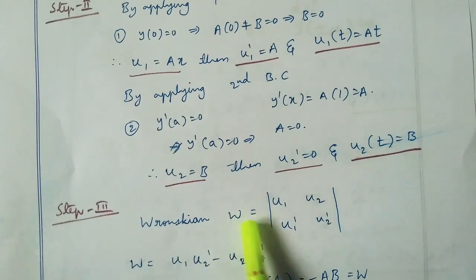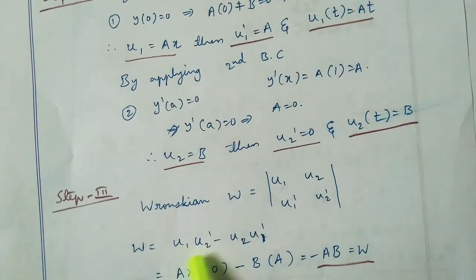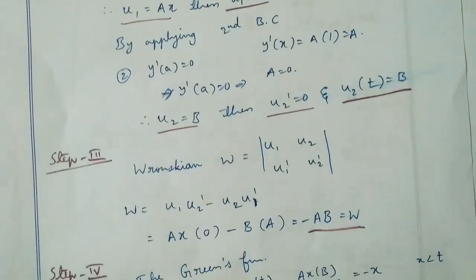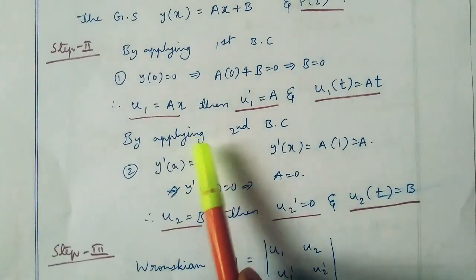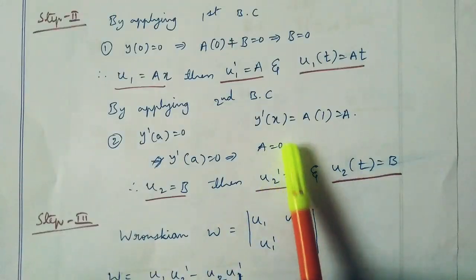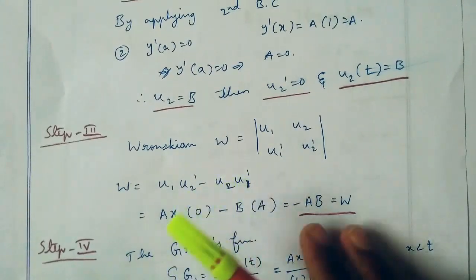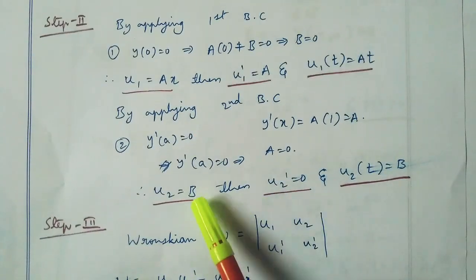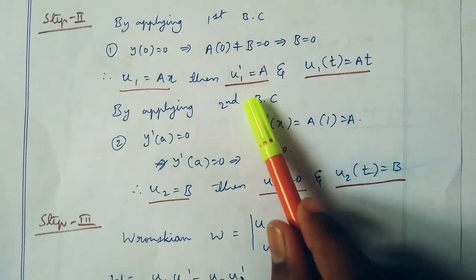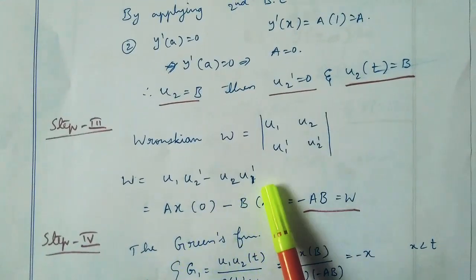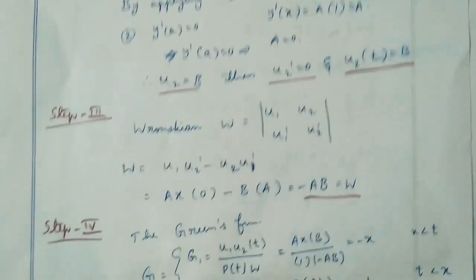The Wronskian W equals the determinant of u1, u2 and u1 dash, u2 dash: W equal to u1·u2 dash minus u2·u1 dash. This equals u1 dash is a, so ax·0 minus b·a, so W is equal to minus ab.